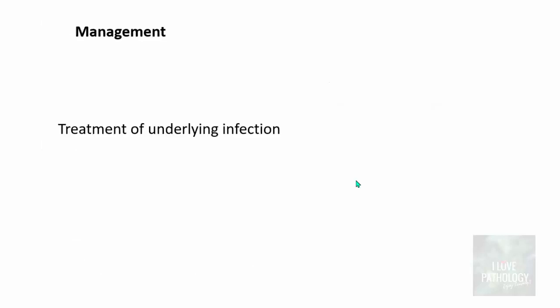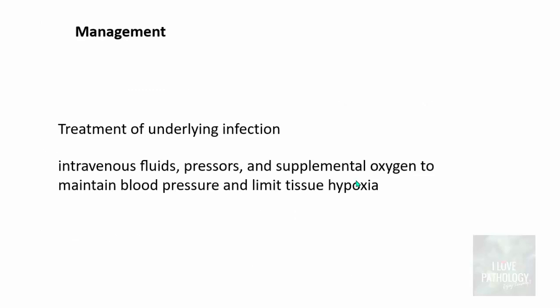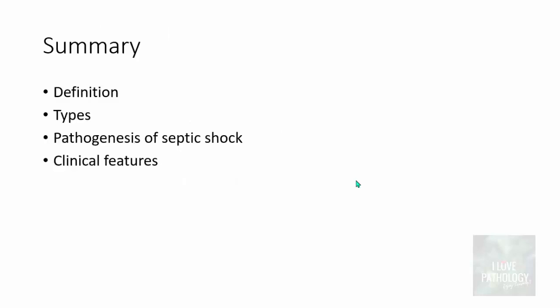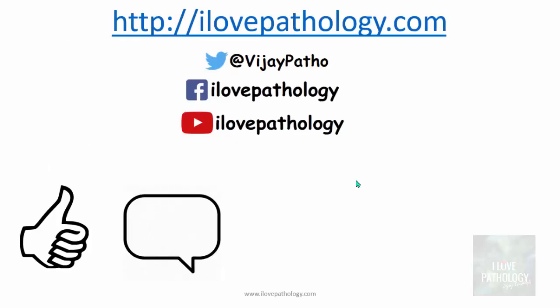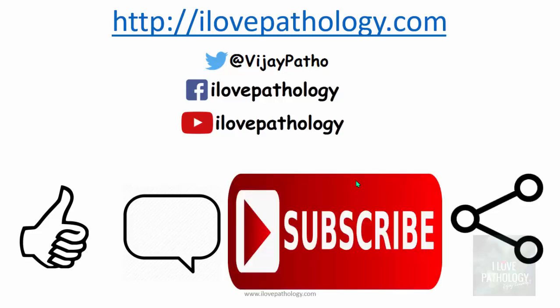How do you manage a case of shock? You have to treat the underlying infection and support your treatment by giving intravenous fluids, vasopressors, and supplemental oxygen — basically to maintain blood pressure and limit tissue hypoxia. In summary, we understood the definition of shock, the various types of shock, the detailed pathogenesis of septic shock, and concluded with basic clinical features and management of shock. Thank you for watching — please like, comment, subscribe, and share.